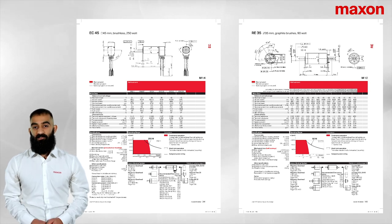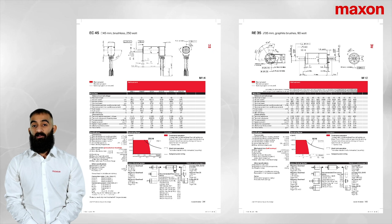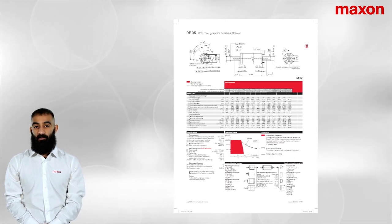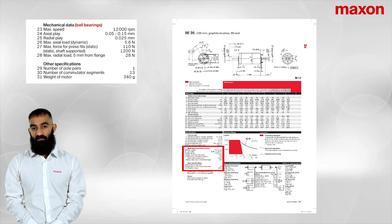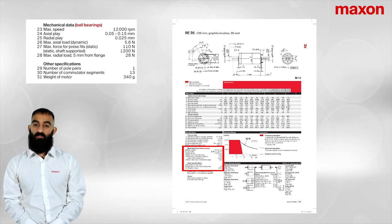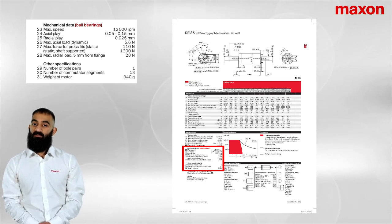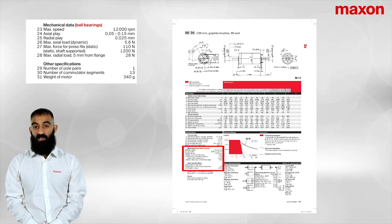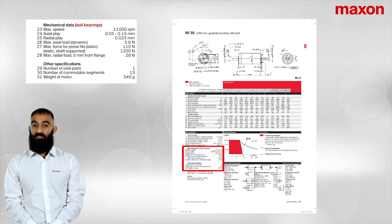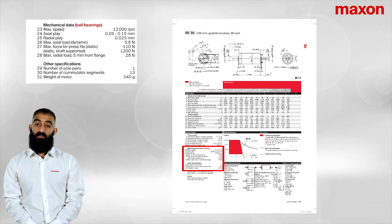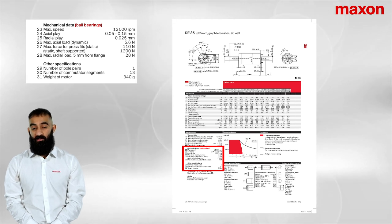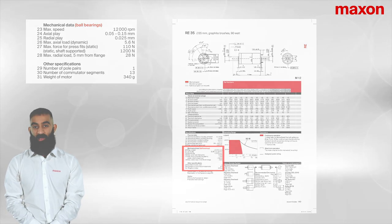The last thing I would like to touch upon is the mechanical data regarding the ball bearings, and this is represented here. If you've watched our previous video on introduction to Maxon brush DC motors, the ball bearings are a limiting factor to the service life. Staying within the limits of the actual load and the radial loads and within the maximum speed will optimize the ball bearing life.